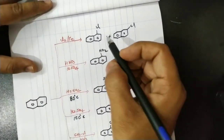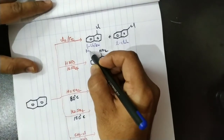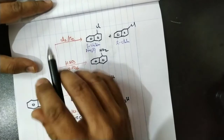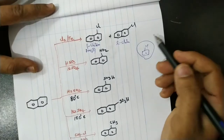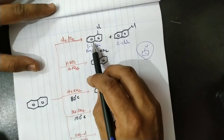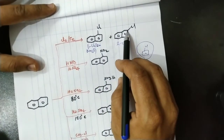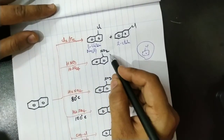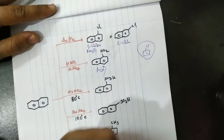Naphthalene on chlorination gives 1-chloronaphthalene and 2-chloronaphthalene. 1-Chloronaphthalene is the major product because the alpha position (C1) is most preferable for electrophilic attack. In benzene, monochlorobenzene is the only product, but in naphthalene both 1-chloronaphthalene (alpha) and 2-chloronaphthalene (beta) are possible, with alpha being major. Similarly, in nitration, 1-nitronaphthalene and 2-nitronaphthalene are possible, but 1-nitronaphthalene is the major product.